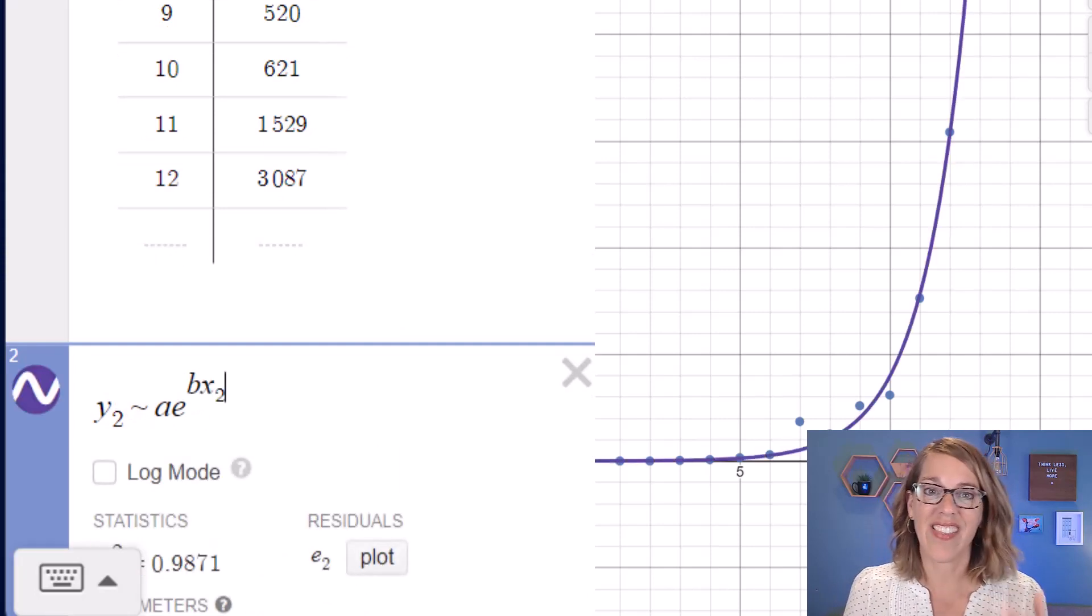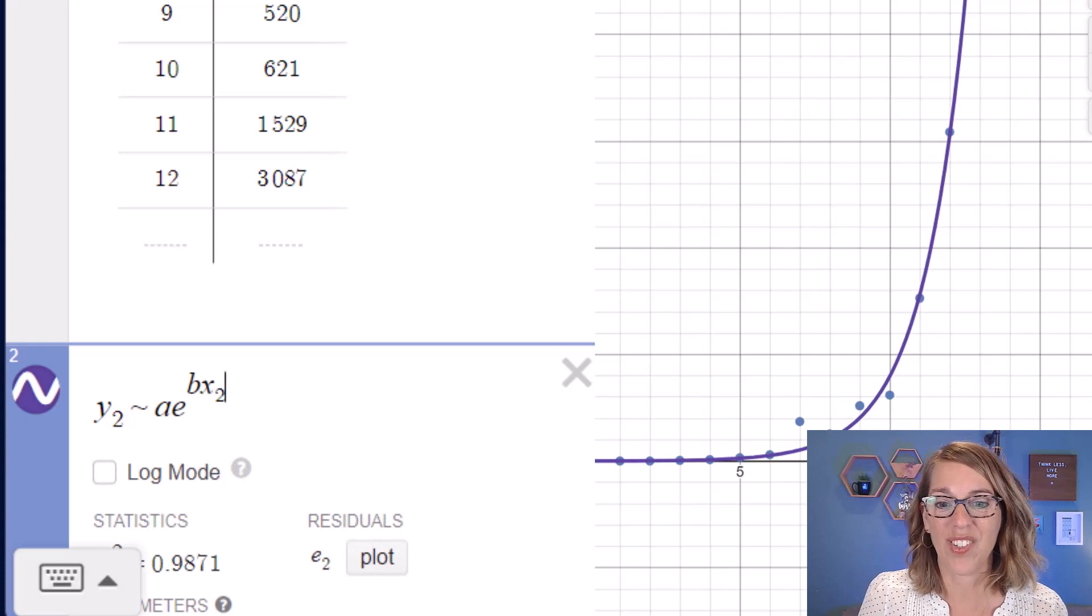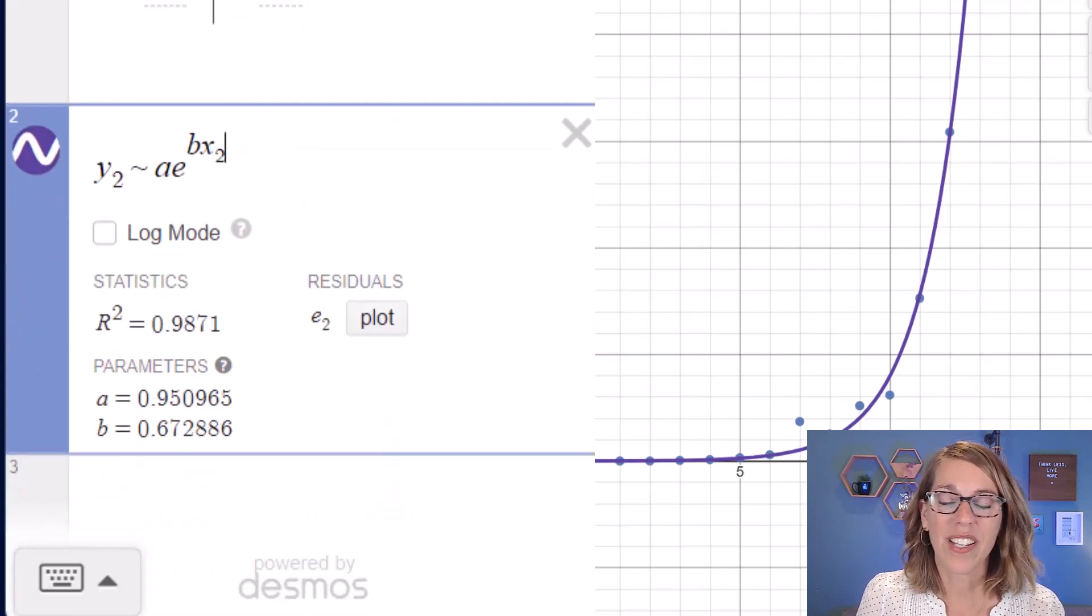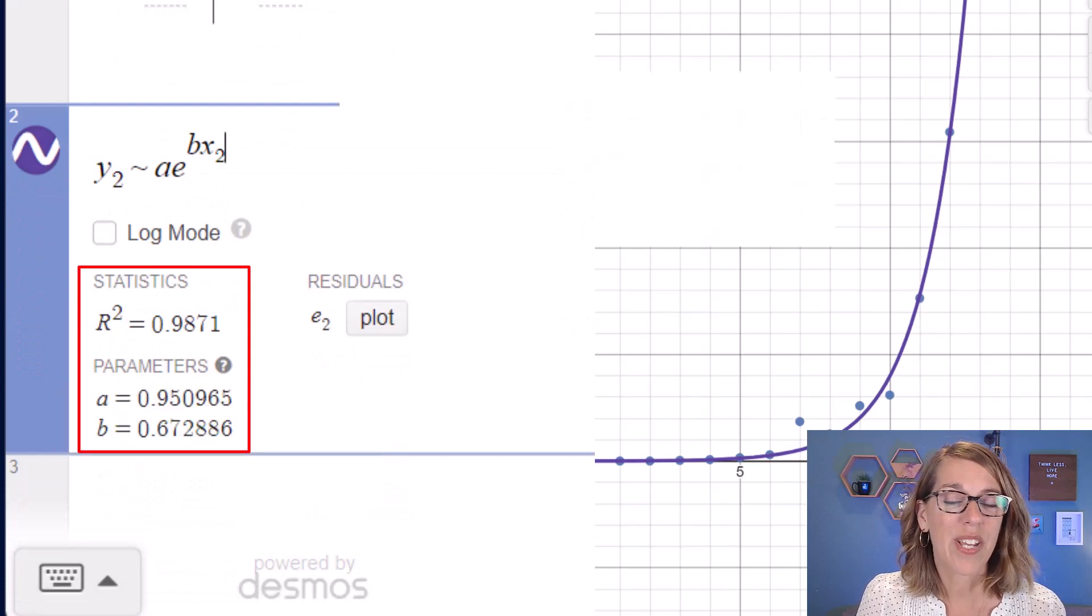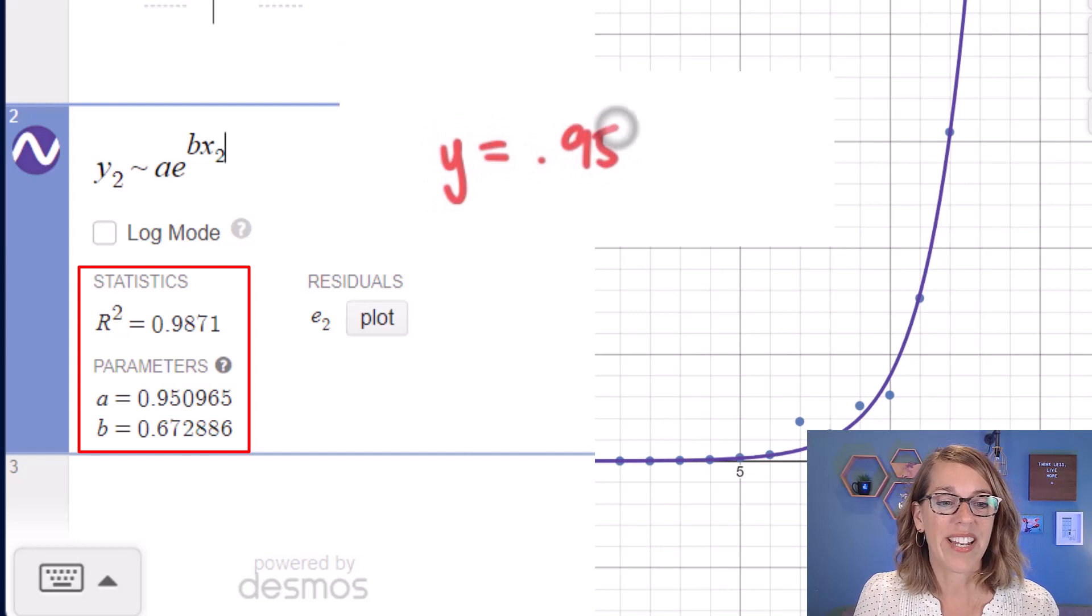And now it's linked that regression equation to my data. Again, a really nice r squared value here, very close to one. And we can write that regression as y equals 0.95e to the 0.67x.